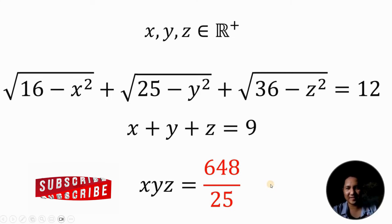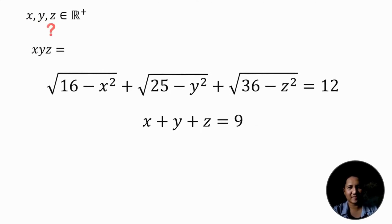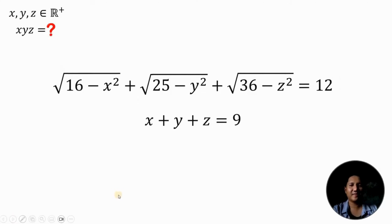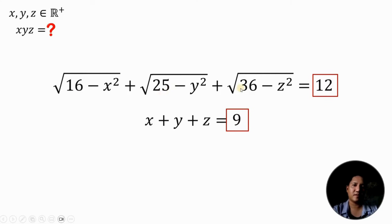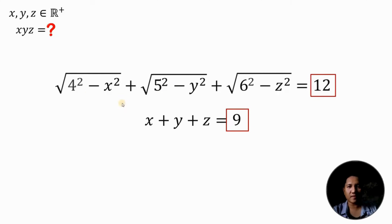So here's the solution. First, we need to observe the given. Take note of these two numbers, 9 and 12. Also, 16 is 4 squared, 25 is 5 squared, and 36 is 6 squared. And 4 plus 5 plus 6 is simply equivalent to 15.